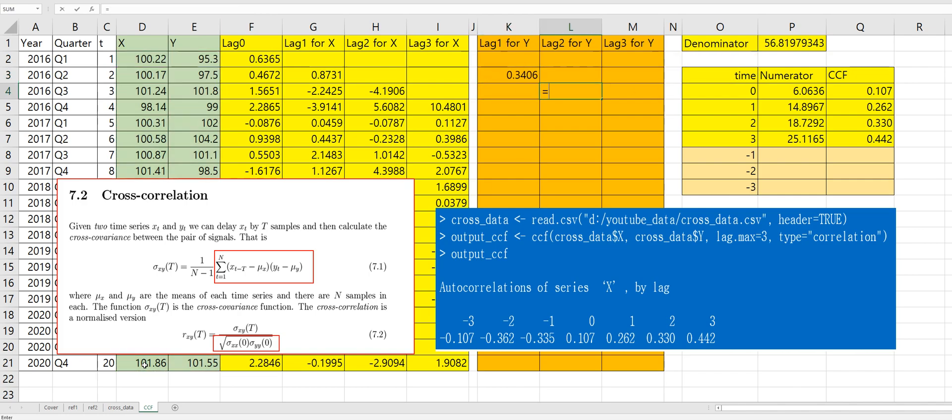So for lag two, for Y, average of Y variable times X1 minus average of X variable.